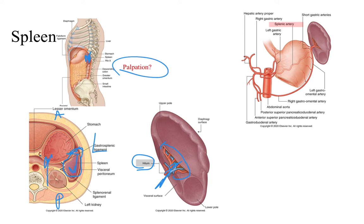With the blood supply to the spleen, it is the splenic artery that comes up and gives the spleen its blood supply. There's also a blood supply coming from the left gastro-omental artery — an anastomosis, a redundant blood supply, so that if one source gets blocked the spleen can still receive blood from another source.